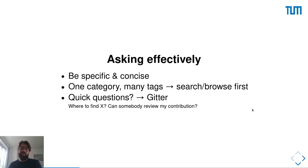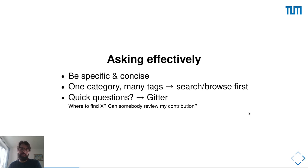You need to select a category for your topic, but afterwards don't forget to add different tags as well. As you saw before, you can use tags to search or browse for similar issues. If you have quick questions — for example, on where to find something — please contact us on Gitter.